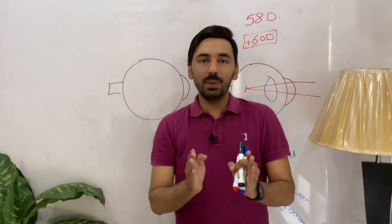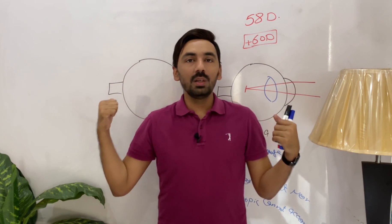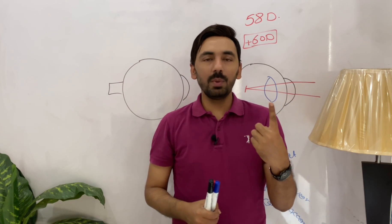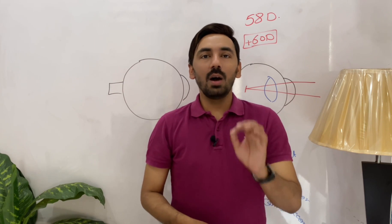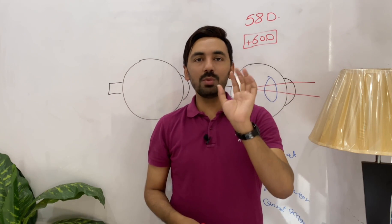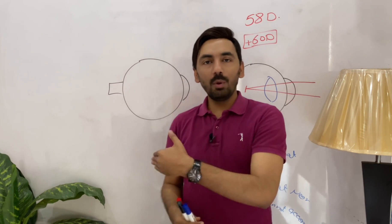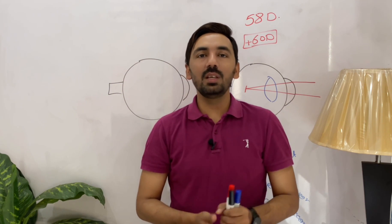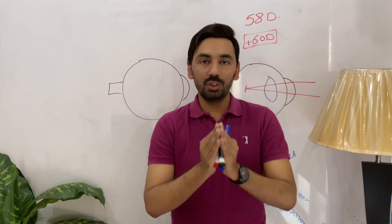In hypermetropia, compared to myopia, the hyperopic patient will see a somehow clear image at distance. Statement two: the hyperopic patient will never see a clear image at near. Statement three: the hyperopic patient will always exert accommodation. These are my three statements, and I will now prove each of them.